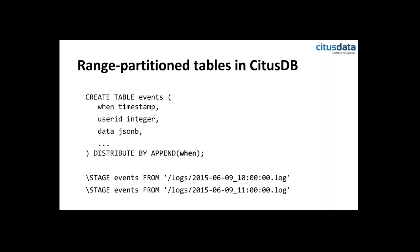To give you a feel for the user experience of creating a range partition table in CitusDB: you create a table as usual with an extra suffix 'distributed by append', and specify the partition column — in this case, the timestamp. To load data into the database, you use the stage command, which is just like the copy command but also does replication and applies to distributed tables. You can take a log file and stage it into the database. It's not as fast as copy because of the replication, but you can scale this out across a cluster since the data doesn't have to go through the master.